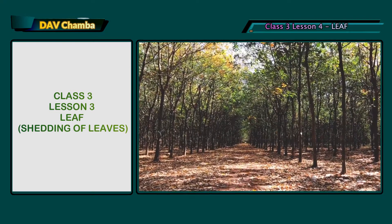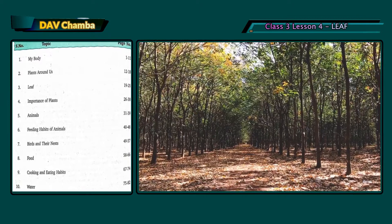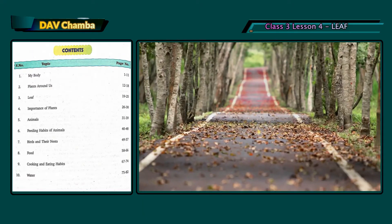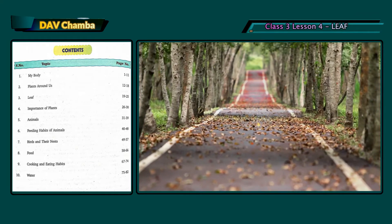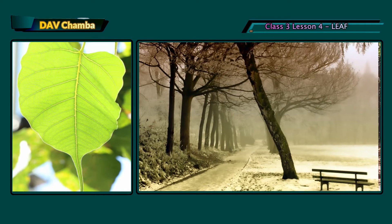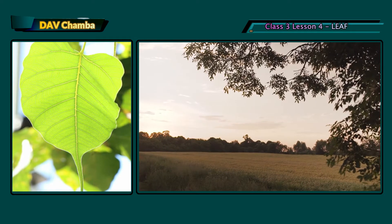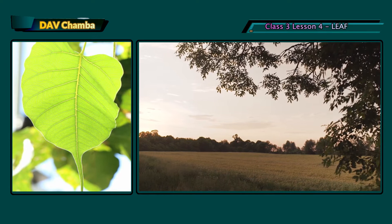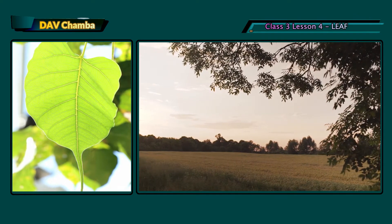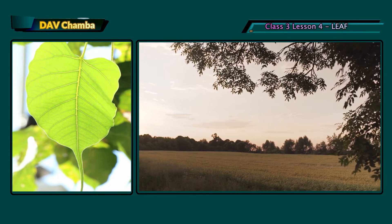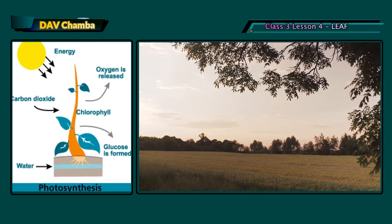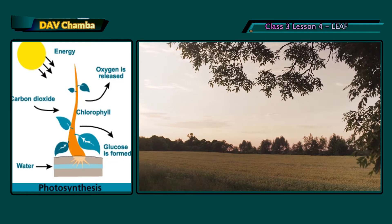In certain seasons of the year, we see very many leaves lying on the lawns and the roads. This shows that the leaves of plants are not permanent. Leaves remain on the plant only till they are able to perform their function well. The main function of a leaf is to carry out photosynthesis, which provides the plant with the food it needs to survive.